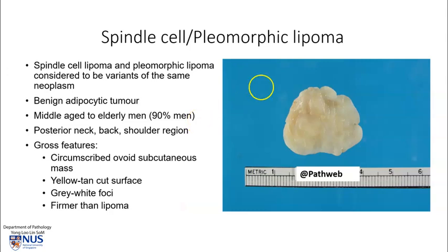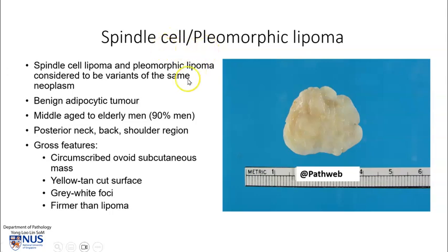There are several other types of lipomas in addition to the classical lipoma, and here is an example of a spindle cell or pleomorphic lipoma. These two lesions are generally considered to be variants of the same neoplasm, so we can see mixed spindle cell areas and also pleomorphic areas in the same lesion. This is also a benign adipocytic tumour, and interestingly, this tends to occur very specifically in middle-aged to elderly men, and usually in the region of the posterior neck, the back, and the shoulder region.